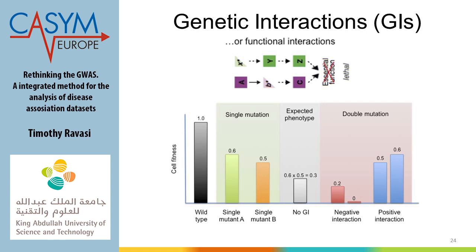If you mutate gene A (reducing fitness by 0.5) and gene B (also 0.5), you can do all possible combinations to understand the interaction. Keep in mind these are not physical interactions but functional interactions. If gene A reduces fitness by 60% and gene B by 50%, the expected additive phenotype would be a ~30% residual fitness. If multiplicative, the expected phenotype is a further reduction. The expected double-mutant phenotype depends on your model.